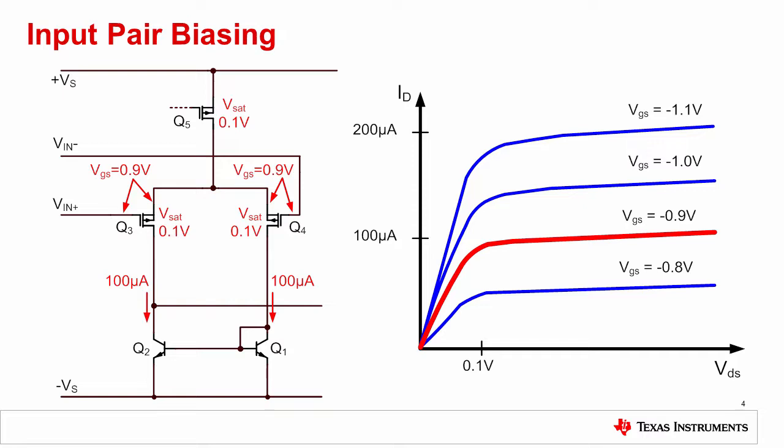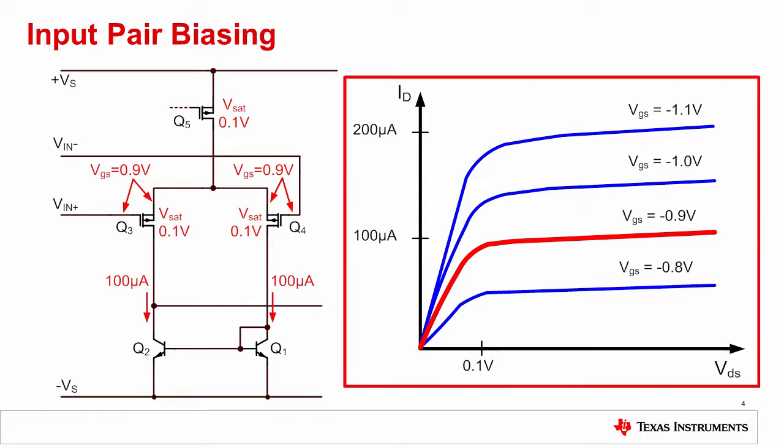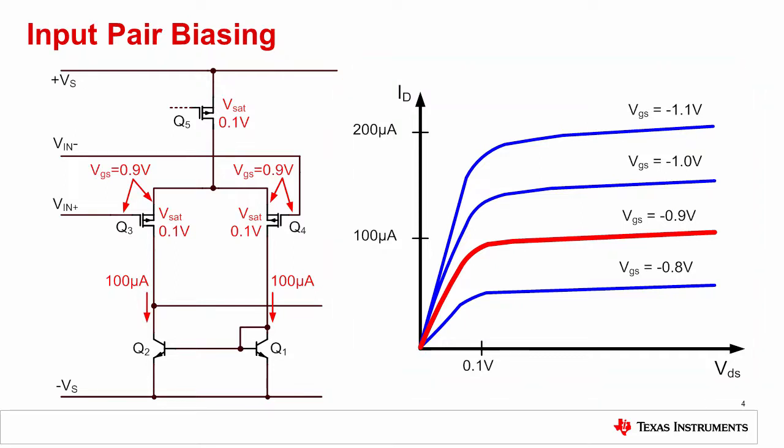Changing the input common mode voltage results in a change of the drain to source voltage, or VDS, of the input transistors. This will shift the operating point on the ID versus VDS curve from left to right. In order to assure linear operation of the input stage, you need to operate on the flat part of the curve.